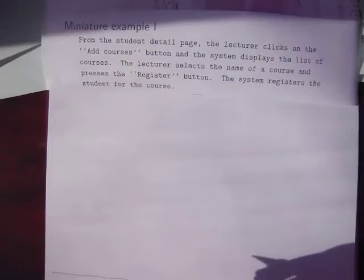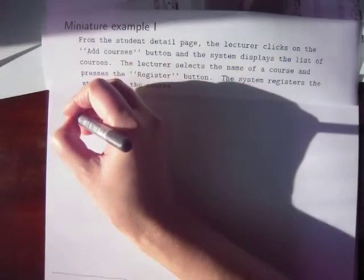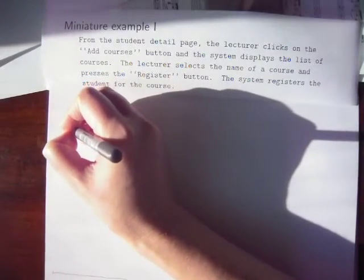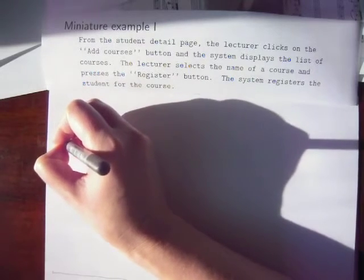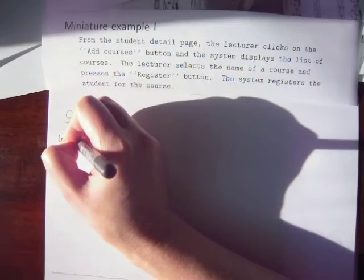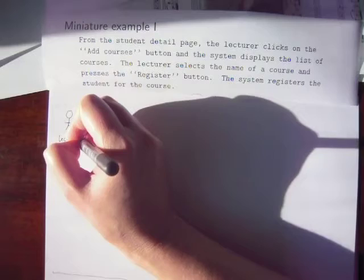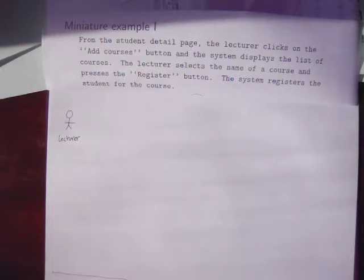How do we get started? What's going to be on our robustness diagram? We're going to have a lecturer actor instance. This is an instance of the actor in our use case diagram, and it's the thing outside the system boundary which is going to start the whole thing off.